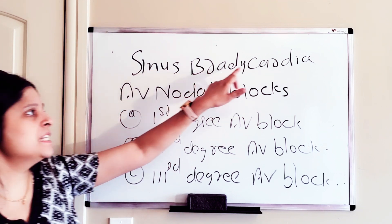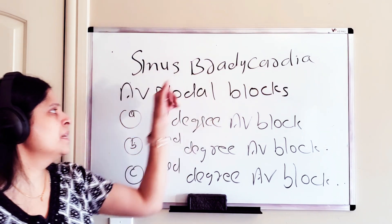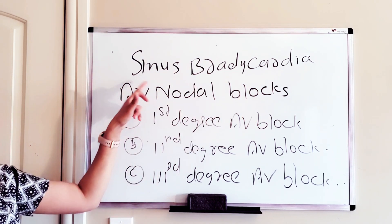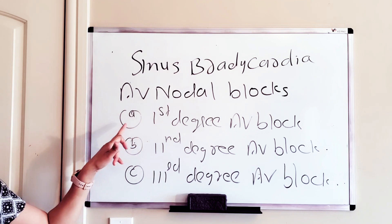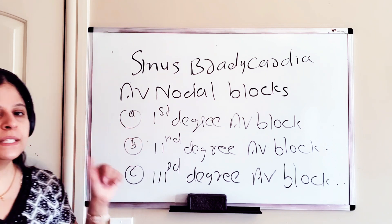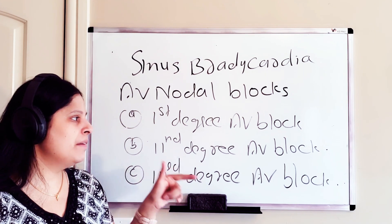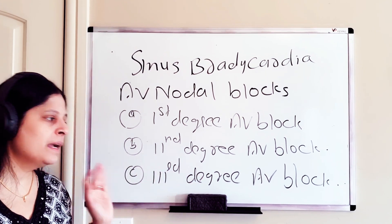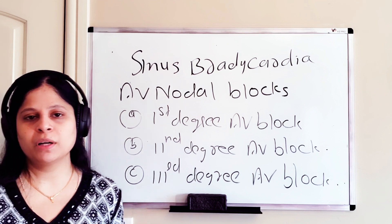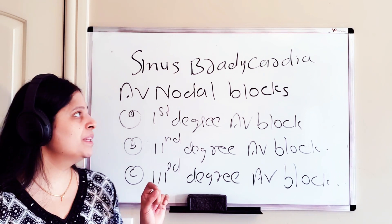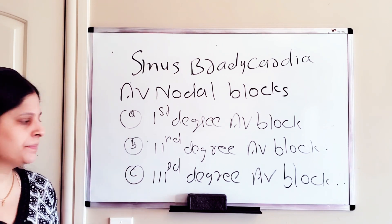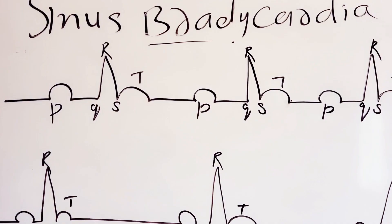There are different types of bradycardic rhythms. The first one is sinus bradycardia. The second involves AV nodal blocks, which include first degree AV block, second degree AV block, and third degree AV block. We will begin with sinus bradycardia.